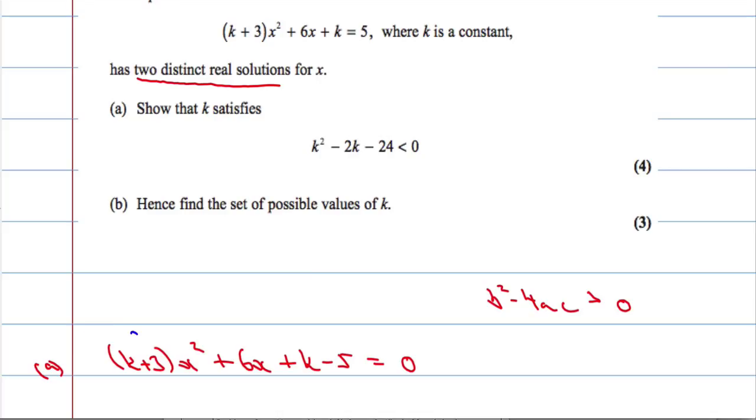So k + 3 is going to be the coefficient a, the positive 6 is going to be the coefficient b, and the k - 5 is going to be the coefficient c.